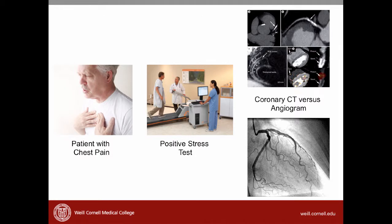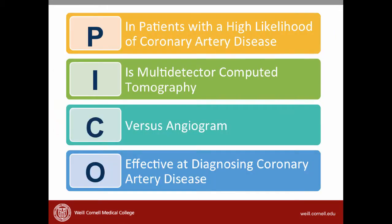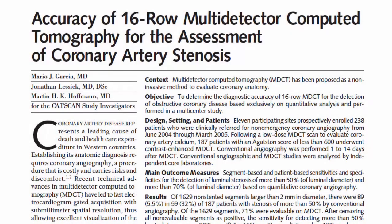Let's review the case and the article that we chose. You're seeing a patient who has chest pain and a positive stress test. He asks you if he could do a coronary CAT scan instead of an angiogram to diagnose coronary artery disease. You came up with this PICO question: in patients with high likelihood of coronary artery disease, is multi-detector computed tomography versus angiogram effective at diagnosing the disease? You then searched the literature and found this article.